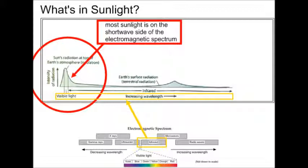On the y-axis, you can see the intensity of radiation, which is another way of saying the amount of energy, and the graph shows how much energy is in which kind of wavelength. You can see that most of the sunlight is on the short-wave side of the electromagnetic spectrum, and that's the part that I've circled with a red circle.